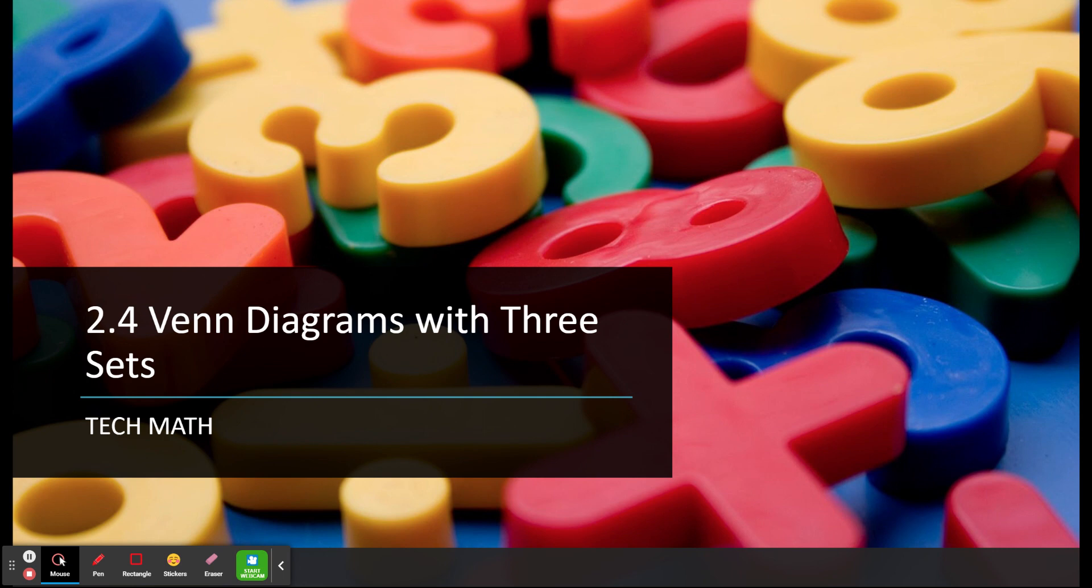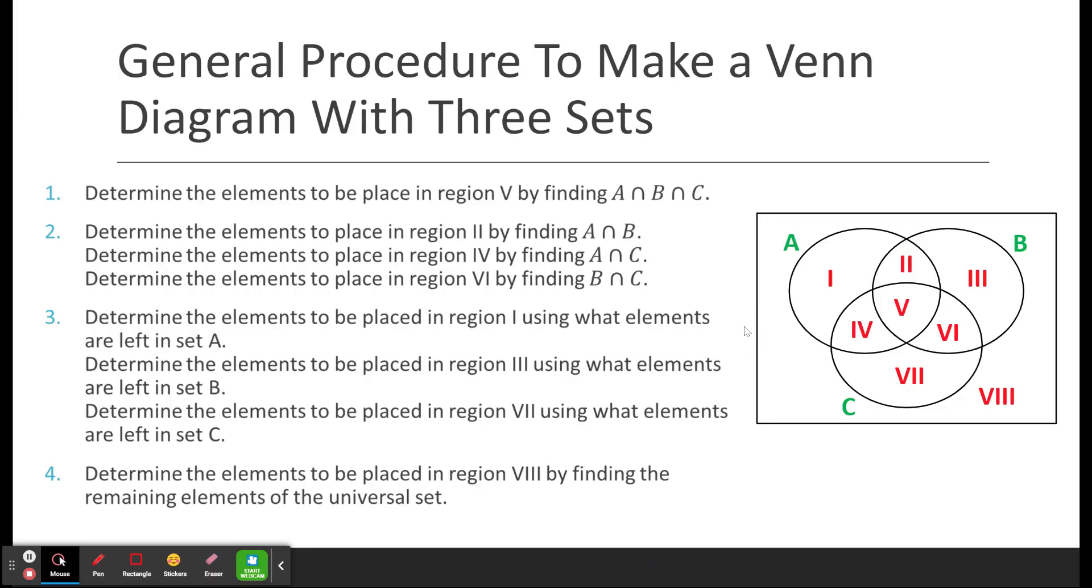When we talk about three sets, there's a particular method by which we go about finding our different areas, and you're going to see this graphic appear periodically. We have set A, set B, and set C, and within each of the different sets, we have different regions. Roman numerals 1, 2, 3, 4, 5, 6, 7, and 8.